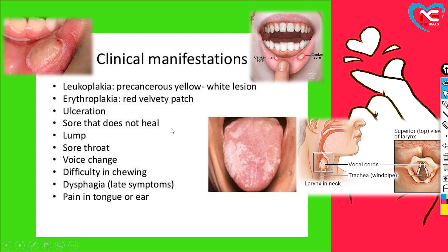We all know that oral cancer — also called mouth cancer — whether it is lips, jaw, tongue, throat, parotid glands, buccal cavity, or mouth, any cancer in these areas will be called oral cancer.